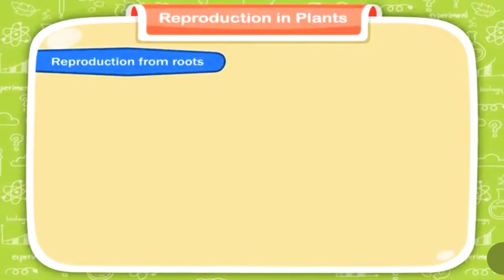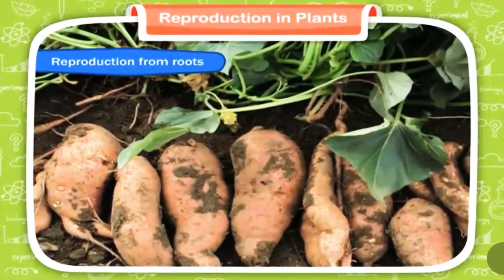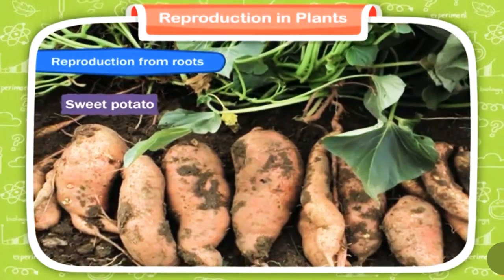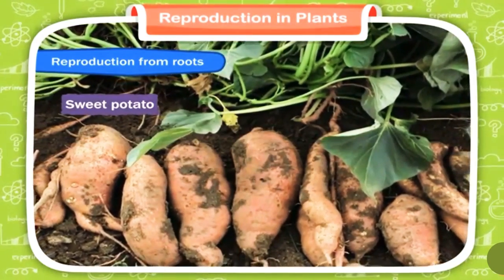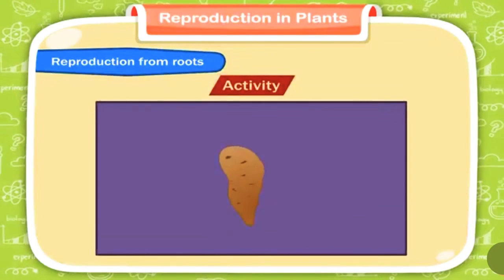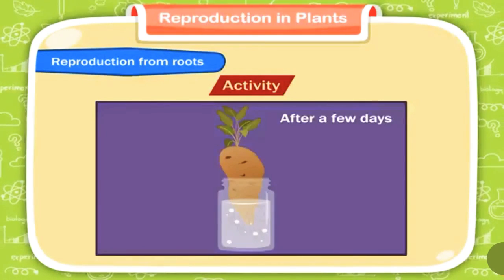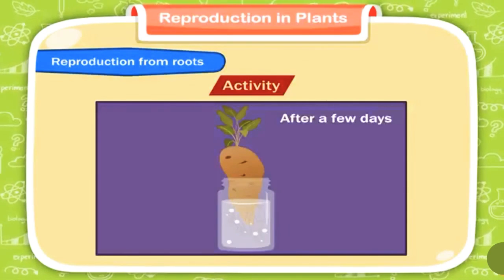Reproduction from roots. The roots of plants like sweet potato grow as new plants. Activity: Take a sweet potato and support it in a bottle containing water using toothpicks. After a few days, a new plant will grow in the bottle.